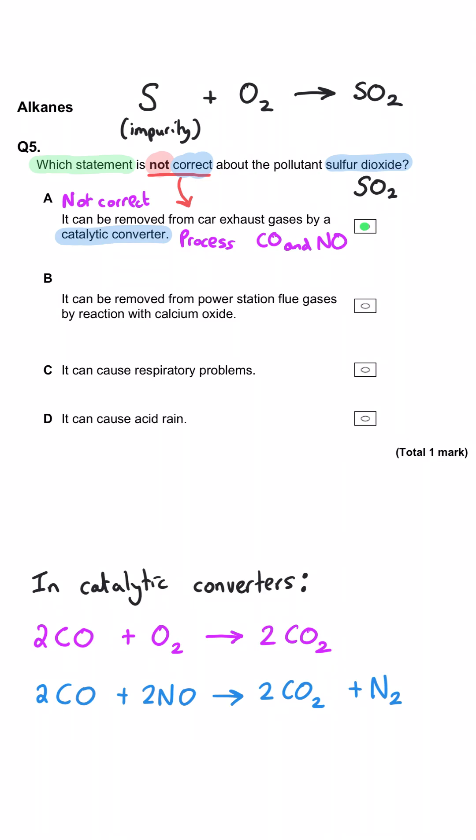And so A is the correct answer. B is a correct statement and therefore not the right answer because we can remove sulfur dioxide from the gases going up the chimney flues in a power station by a reaction with calcium oxide where we make calcium sulfite.